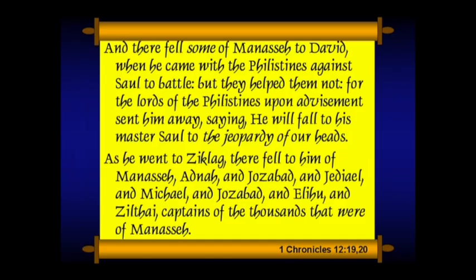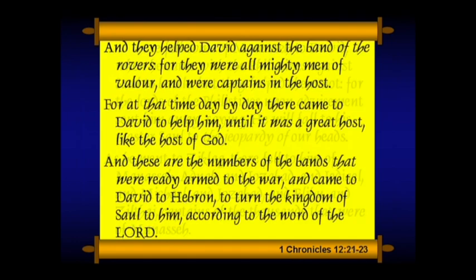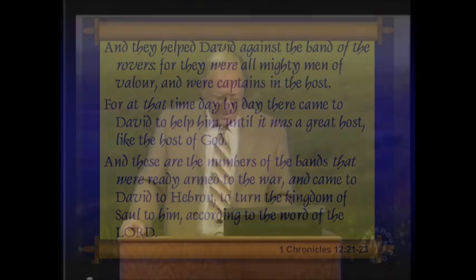And there fell some of Manasseh to David when he came with the Philistines against Saul to battle, but they helped him not, for the lords of the Philistines upon advisement sent him away, saying, 'He will fall to his master Saul to the jeopardy of our heads.' As he went to Ziklag, there fell to him of Manasseh: Adnah, and Jozabad, and Jediael, Michael, Jozabad, Elihu, and Zillethai, captains of the thousands that were of Manasseh. And they helped David against the band of rovers, for they were all mighty men of valor. They were captains of the host, for at that time, day by day, there came to David to help him until it was a great host like the host of God. These are the numbers of the bands ready armed to war that came to David at Hebron to turn the kingdom of Saul to him, according to the word of the Lord — so this is expanding his rule far beyond Hebron now.